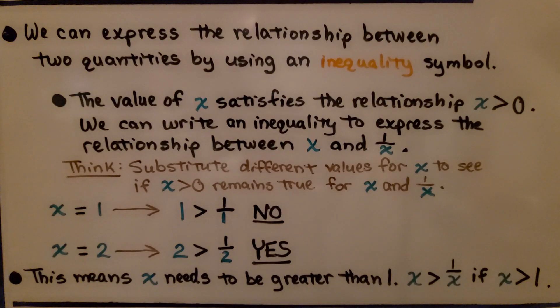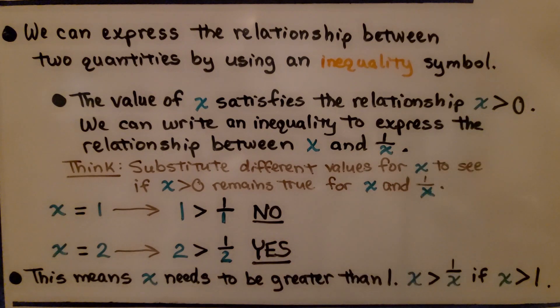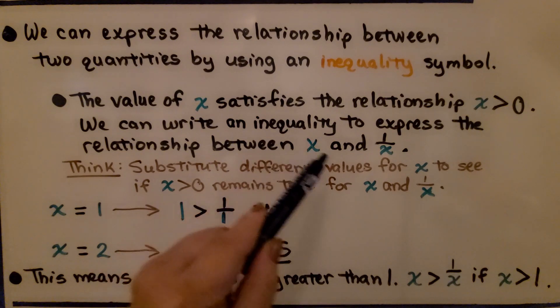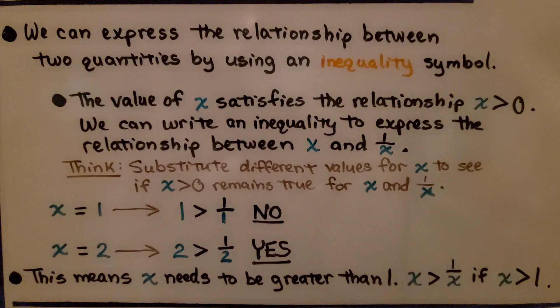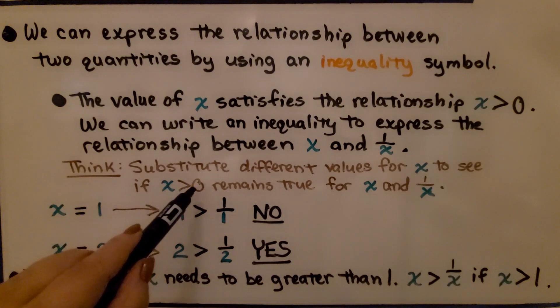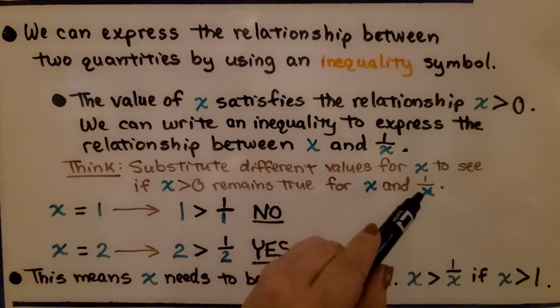We can express the relationship between two quantities by using an inequality symbol. And the value of x satisfies the relationship x is greater than 0. We can write an inequality to express the relationship between x and 1 over x. We think we substitute different values for x to see if x is greater than 0 remains true for x and 1 over x.